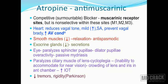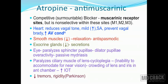The first action of atropine is on the heart: it decreases vagal tone, producing the opposite effect of acetylcholine. This results in a mild increase in heart rate at the sinoatrial node, prevention of vagal bradycardia, and increased AV conduction.